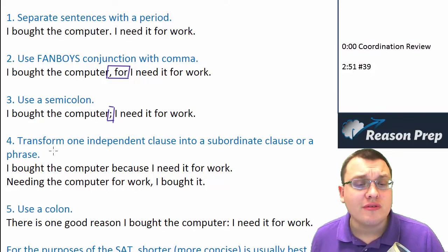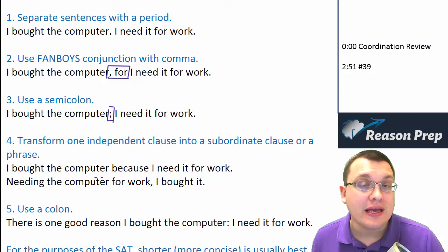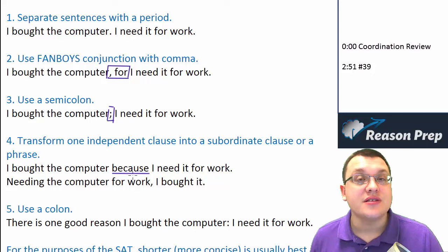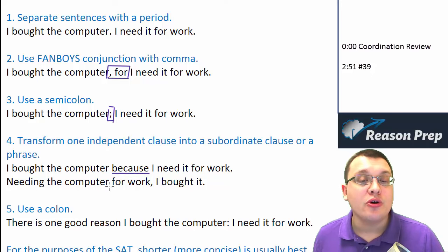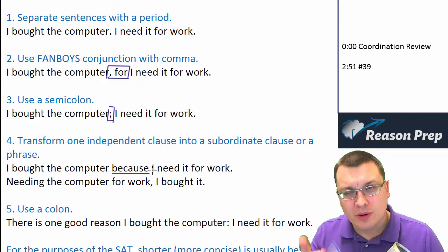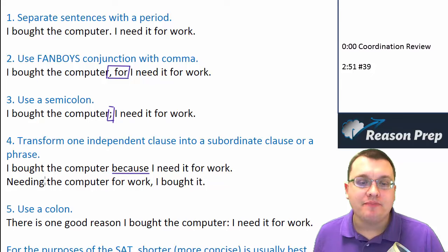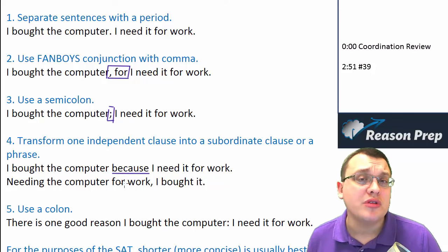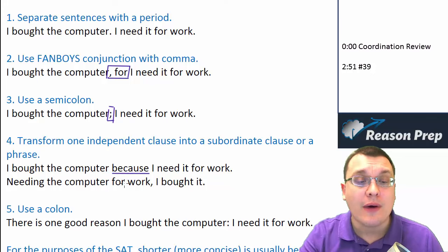You could, as we just saw previously, transform one independent clause into a subordinate clause, or even a phrase, which we haven't talked about quite yet — we will later. For example: 'I bought the computer because I need it for work.' Or changing it into a phrase: 'Needing the computer for work, I bought it' — a little bit awkward, but technically fine. So instead of having two complete sentences, you have one incomplete sentence and one complete sentence connected together.